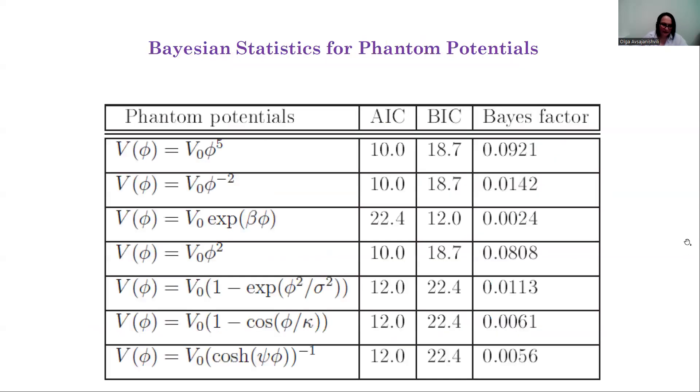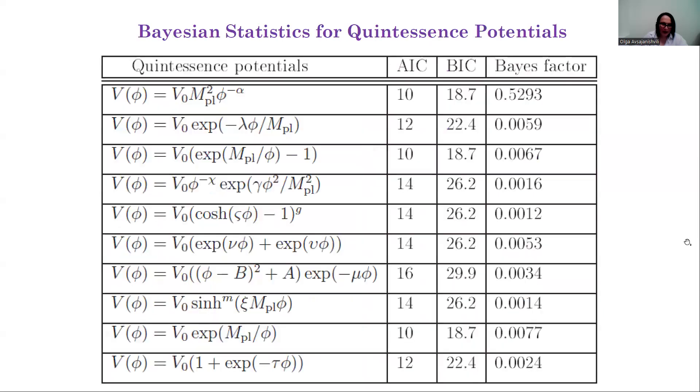According to the results obtained, applying the Bayesian statistical analysis, we could not uniquely identify preferable φCDM models compared to the fiducial ΛCDM model based on the predicted DESI data.